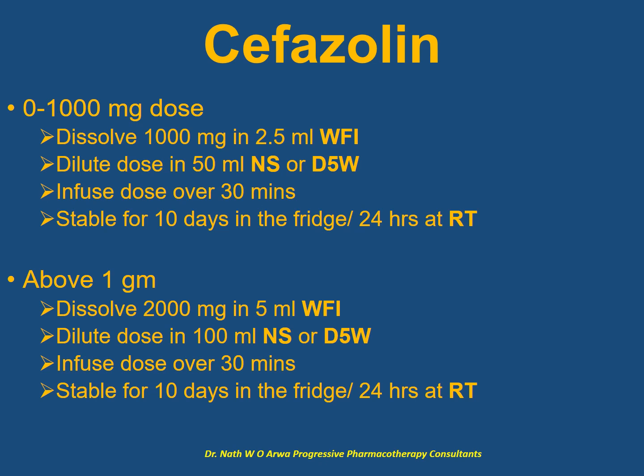For cefazolin, for doses of up to 1 gram, dissolve the 1 gram vial in 2.5 ml of water for injection prior to dilution in 50 ml of compatible IV fluid, then infuse over 30 minutes. Cefazolin solutions in normal saline or dextrose 5% are stable for 10 days in the fridge or 1 day at room temperature. For doses above 1 gram, dissolve every 2 grams in 5 ml of water for injection, dilute further in 100 ml of compatible IV fluid, infuse over 30 minutes, with the same stability.